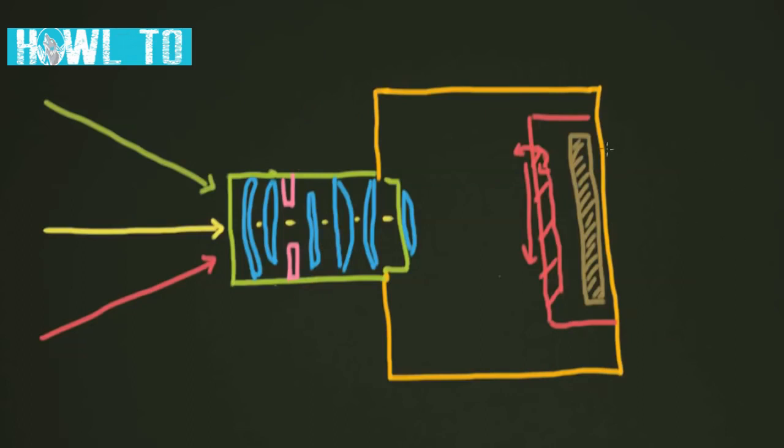Now comes the problem of the viewfinder. Now we're not exactly sure how we're going to see all of this. Now we're going to make this camera into what's called an SLR. Now there's lots of different types of viewfinders. One, the early viewfinder, was just basically two squares. So you'd just make two little squares on the top of the camera.